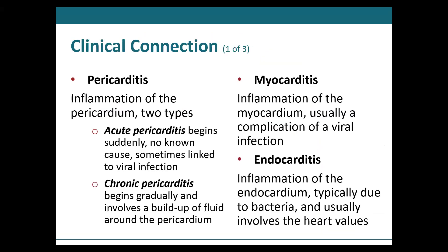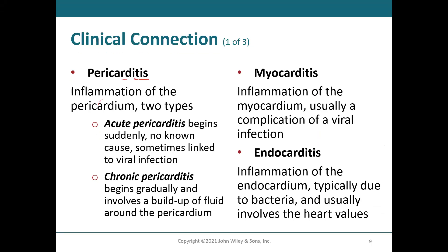Some clinical connections: pericarditis — 'itis' always means infection or inflammation — is when the pericardium gets inflamed, a serious condition. It can be bacterial with sudden acute onset, or viral, or chronic with gradual onset, which is much harder to treat. Myocarditis is inflammation of the muscle itself, and a lot of times that is viral. Endocarditis is inflammation of the endocardium, which can be bacterial — really scary — due to strep or staph. So just get the idea: myo, peri, endo, and itis means inflammation secondary to some type of pathogen attack.